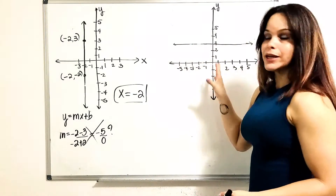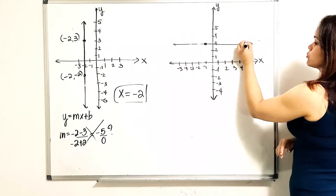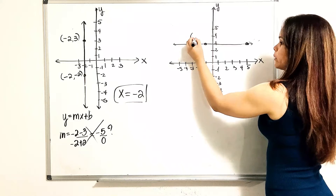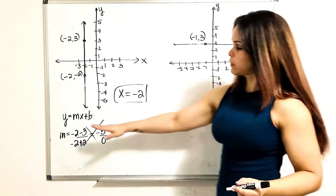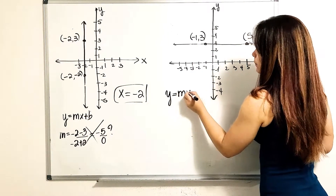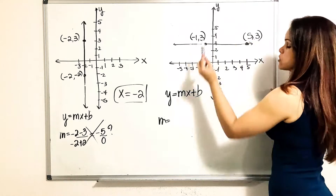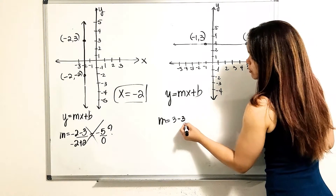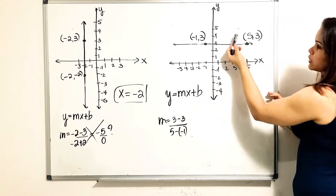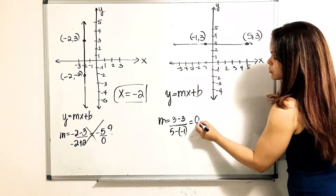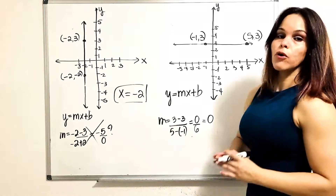Now for the horizontal line, once again I'm going to choose two random points. So let me choose this one and this one. This one is going to have coordinates negative 1, 3. So if I were to apply the equation, I need to find m. So applying the formula, with this as the first point and this as the second, y₂ minus y₁ is going to be 3 minus 3 over x₂ minus x₁, which is 5 minus negative 1. So I have 0 over 5 plus 1, which is 6. And I can divide this — it's going to be equal to 0. This is characteristic of all horizontal lines.